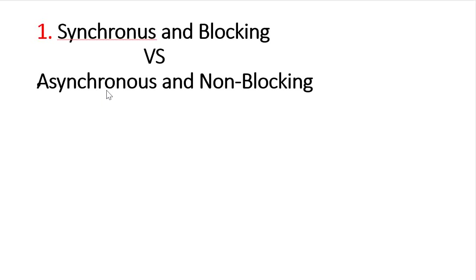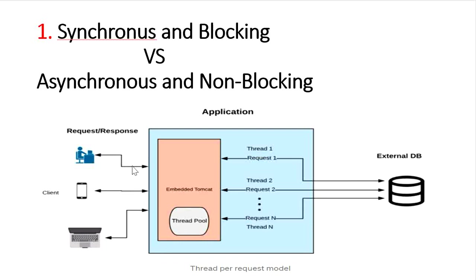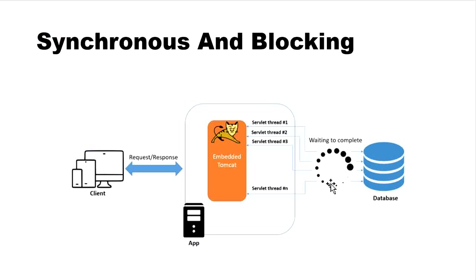Let's understand synchronous and blocking versus asynchronous and non-blocking requests. In the traditional Spring MVC approach, a request comes from the client and goes to the embedded Tomcat server, which uses a thread pool with a limited number of threads. Once the first request comes in, it is assigned to thread one. That thread goes to the database, and it stays in a waiting state until it receives data back from the database.